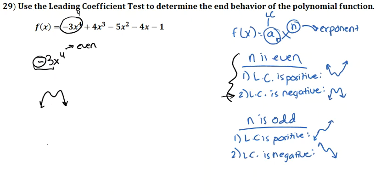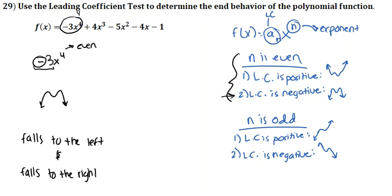To state the end behavior: the graph is going to fall to the left and fall to the right. That is your final answer using the leading coefficient test.